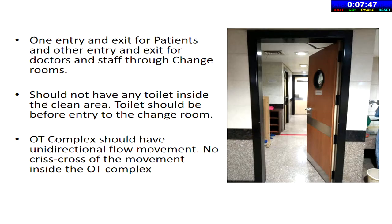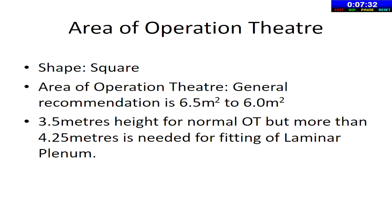There should be separate entry and exit for patients as well as for doctors and staff. There should not be any toilets inside the clean area — toilets should always be before entry to the changing room. The OT room should preferably be square in shape and should have an area of 6 to 6.5 meter square for better asepsis. A height of 3.5 meters is sufficient for a normal ceiling, but more than 4.25 meters is needed for laminar plenum and HVAC ducting.